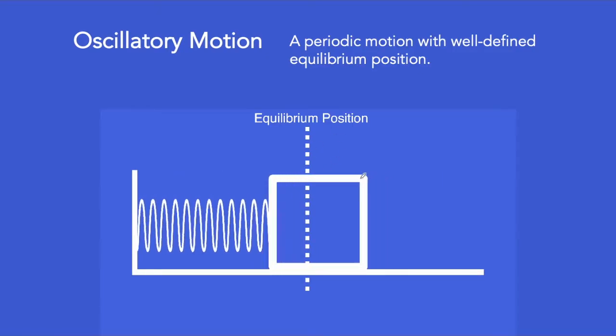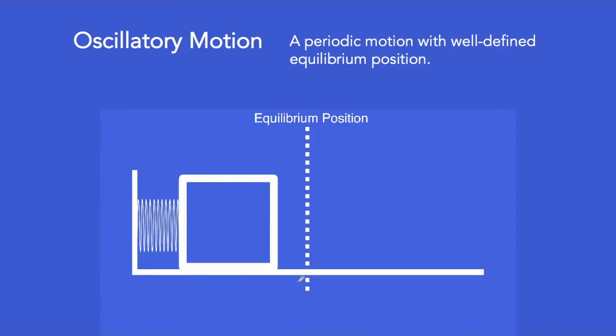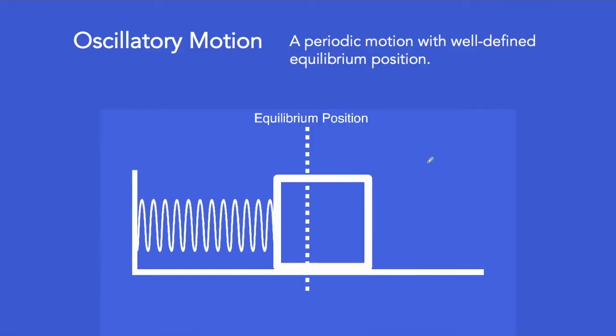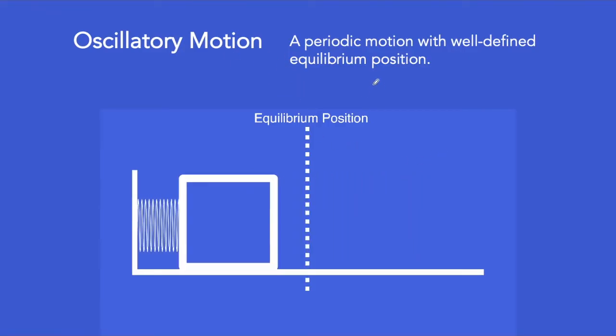Again, if you can pinpoint an equilibrium position for a periodic motion, then that periodic motion is called an oscillatory motion.